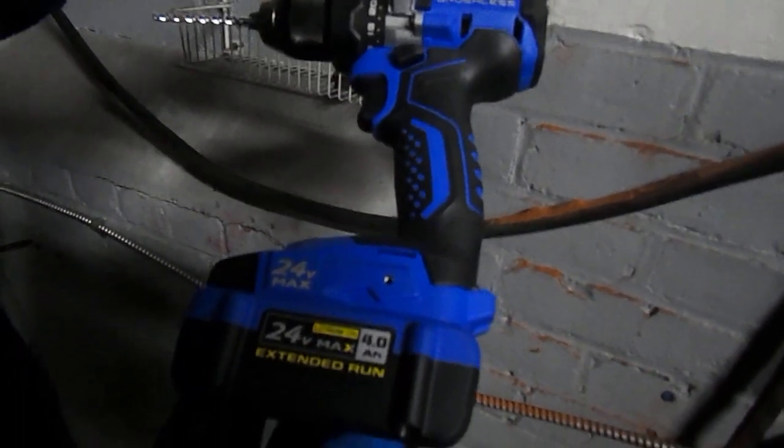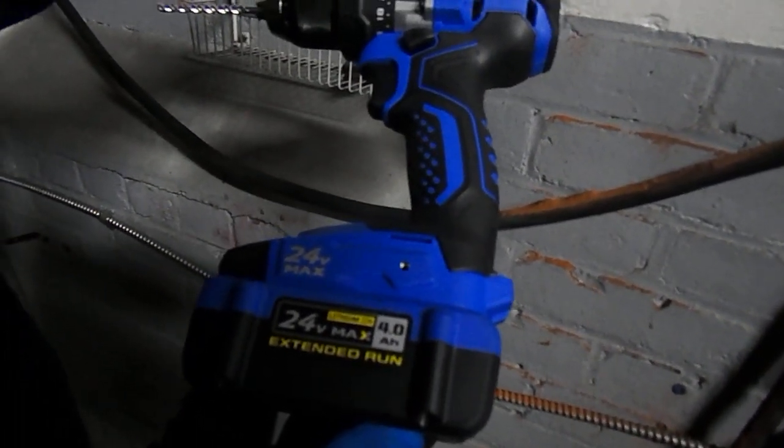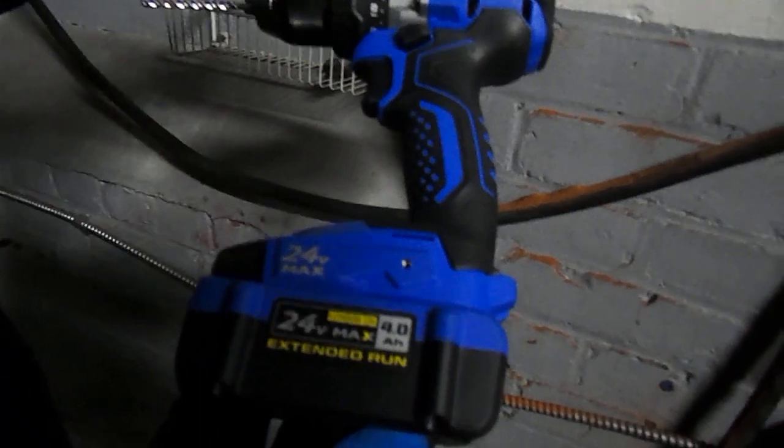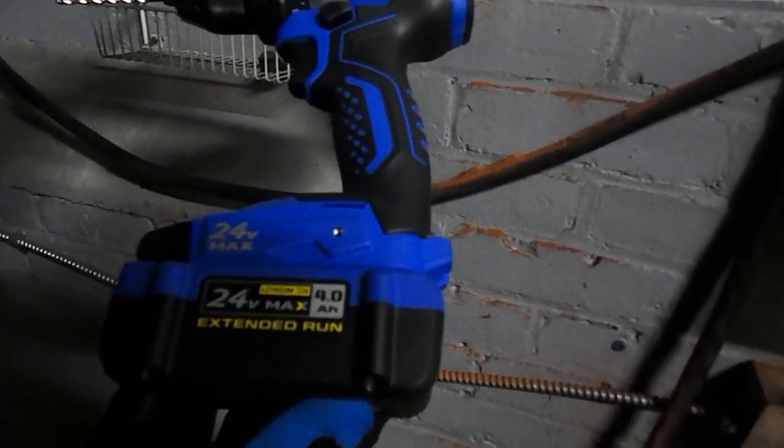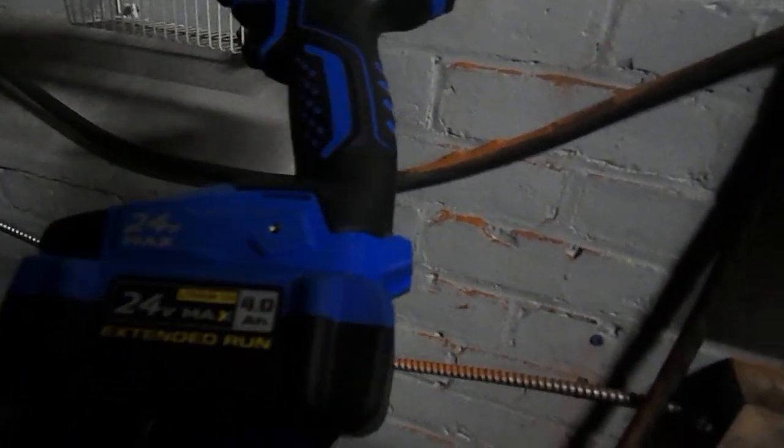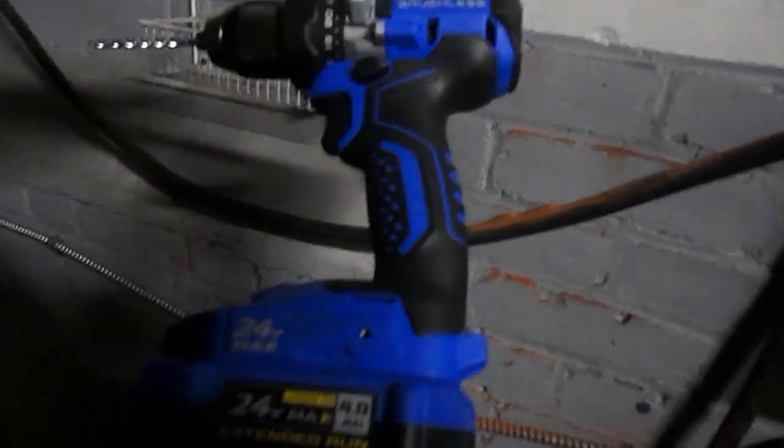Let me specify: today we used the 24 volt max with the 4AH battery. That is extended run. As you can see if we turn it around to the front, you're going to see your battery life monitor, which is right here. You can see after we did all the drilling, the battery life was on full and it is still on full.